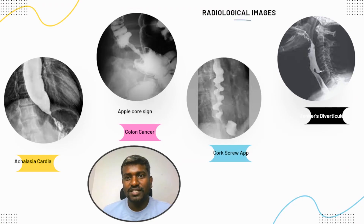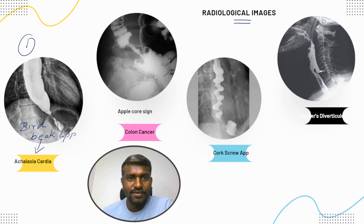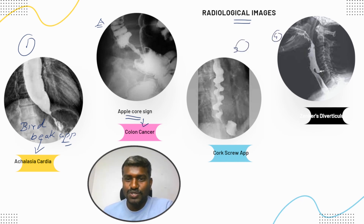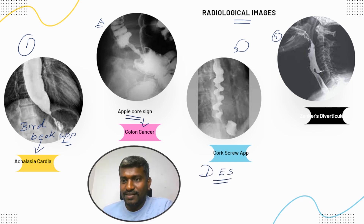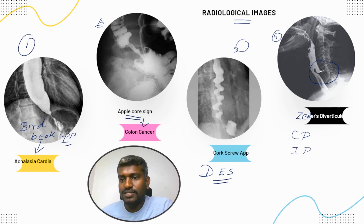Now the radiological images. The first one is achalasia cardia — it shows a bird beak appearance on barium swallow. Next is apple core sign, seen in colon cancer. Corkscrew appearance is seen in diffuse esophageal spasm. And this last one is Zenker's diverticulum — an outpouching between the cricopharyngeus and inferior pharyngeal constrictor muscles.